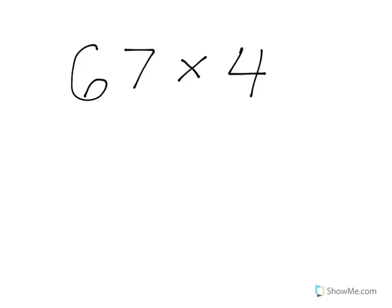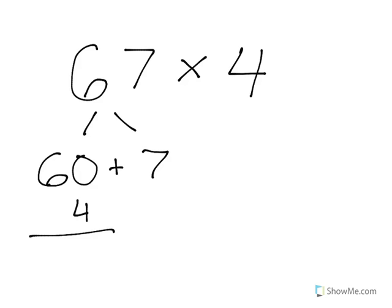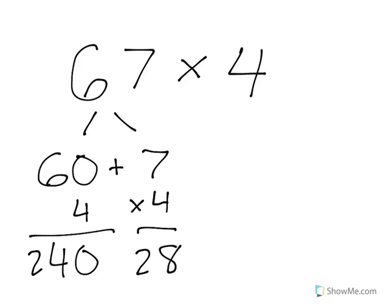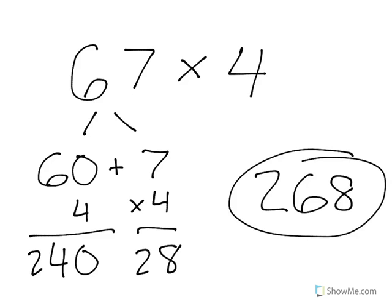Let's look at another one. I have 67 times 4. Again, we're going to break this out into expanded form: 60 plus 7. Multiply each of those by 4. 60 times 4 is 240, and 7 times 4 is 28. Add 240 and 28 together and we get 268 as our product.